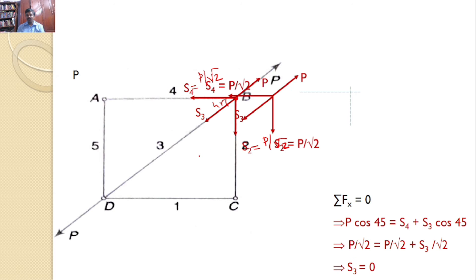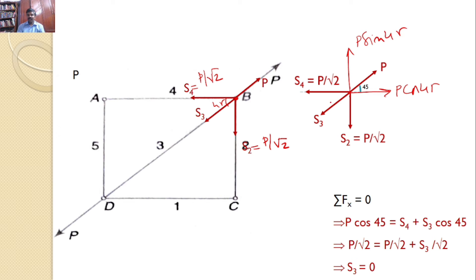Let us transfer all these four forces onto an xy plane. And this makes an angle 45. So, you can resolve this force like this. This is P cos 45 and this is P sin 45 and S3, horizontal component we can say it is S3 cos 45 and vertical component S3 sin 45.